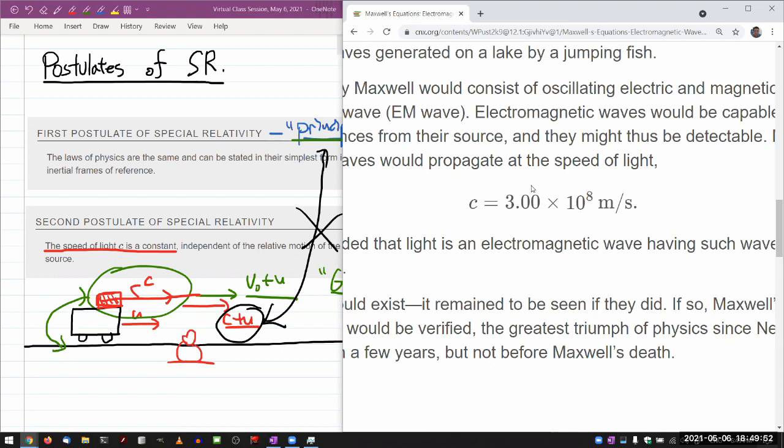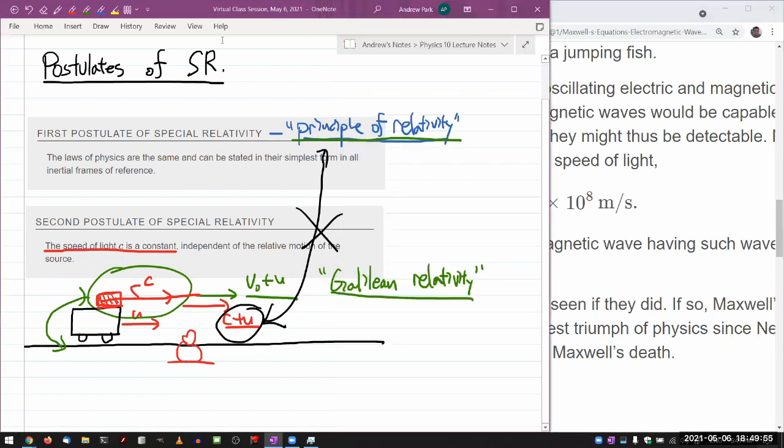So if you believe in the first postulate of special relativity, it says that the laws of physics are the same in all inertial reference frames. And if you believe, as you should, that the laws of physics includes Maxwell's equations, if it includes the theory of electromagnetism, then you are forced into saying that Maxwell's equations are the same in all inertial reference frames.